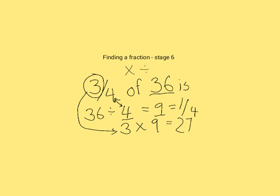Okay, so this was finding a fraction using multiplication and division at stage six. Let's just go through what we did. For starters, we understood that 36 was our whole. We needed to find three quarters of that. We divided by the denominator first, which was four, and we multiplied by the numerator, which is three. Three quarters of 36 is equal to 27.